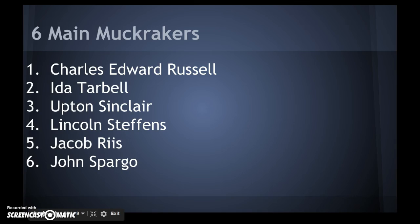Fourth is Lincoln Steffens — he targeted political corruption such as vote stealing; his book was called The Shame of the Cities. Jacob Riis, number five, wrote How the Other Half Lives and revealed the deplorable conditions of immigrant neighborhoods in New York City — the immigrant poor living in tenements. Last, John Spargo — you can write his name down — he revealed the horrors of child labor; his book is The Bitter Cry of the Children. To conclude, all were catalysts that sparked a need for change.